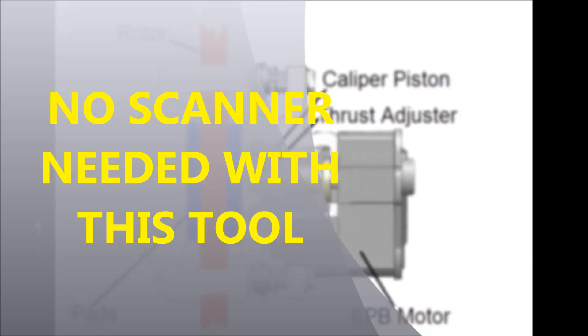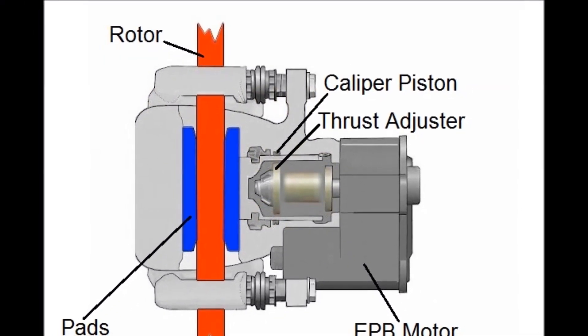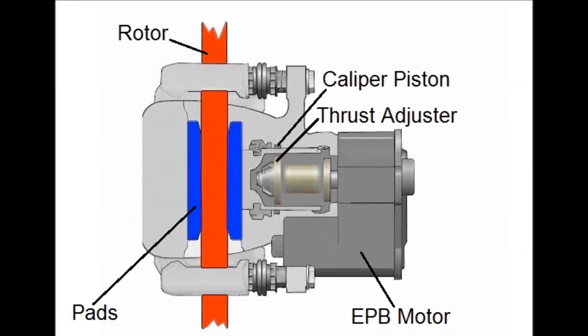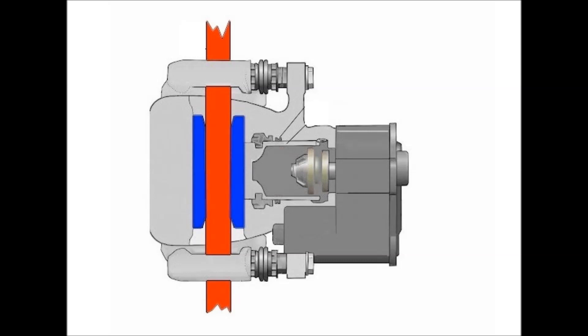In other words, you go in, you retract the caliper, you do your brake job. Once you retract, you can do your brake job normally and then you have to advance or contract the caliper again.